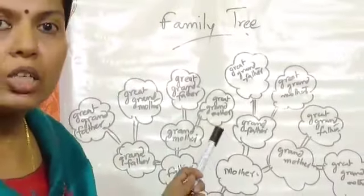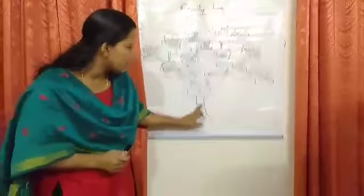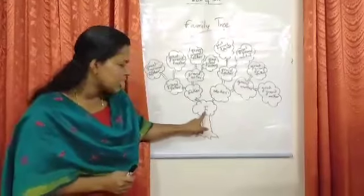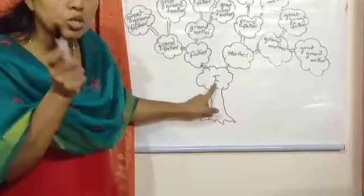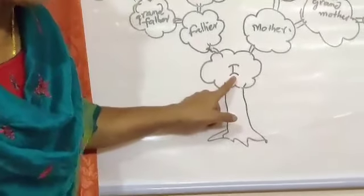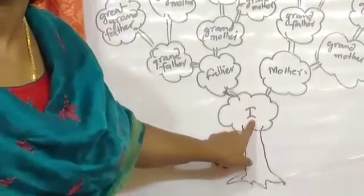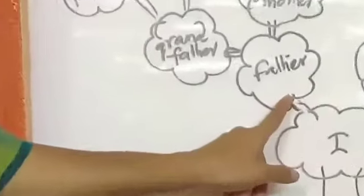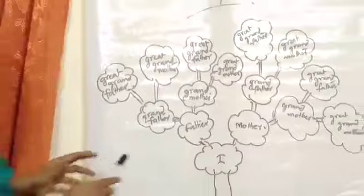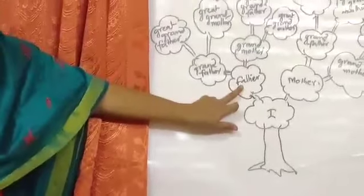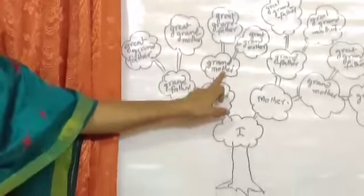Family tree — what's that? Many members are there in your family and they are all connected. We will start from the bottom — here it is written 'I'. You must also draw this picture. Here 'I' means if you are drawing this picture, you must write your name. Then one branch here, another branch here — you must write your father and mother, write the name of your father, write the name of your mother.